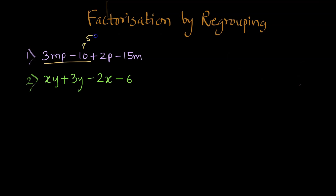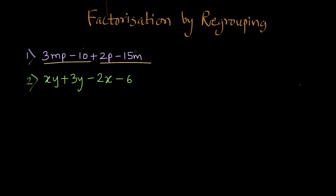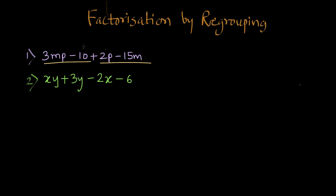10 can be written as 5 times 2 and 3MP can be written as 3 times M times P. We don't really see any common factors. Now we will look at the other two terms. Let us see whether there are any common factors between 2P and 15M. 2P can be written as 2 times P and 15M can be written as 5 times 3 times M. But we do not really see any common factors there either.